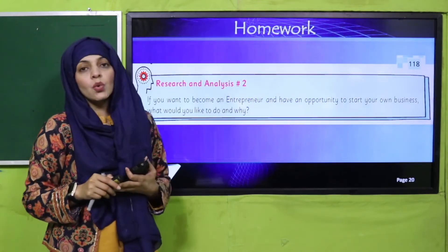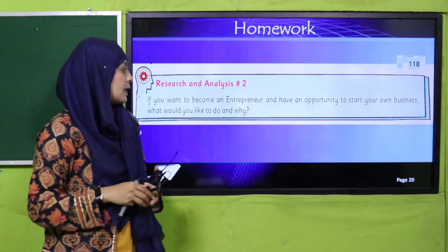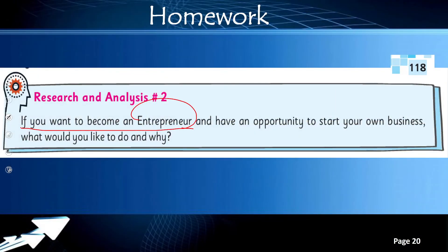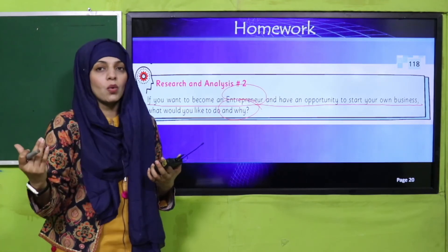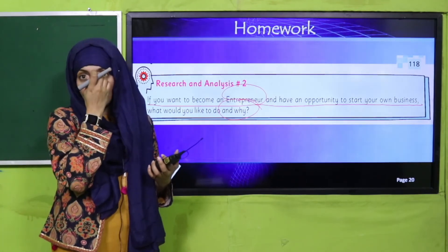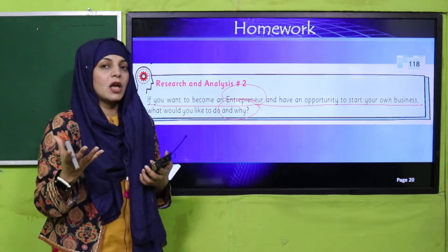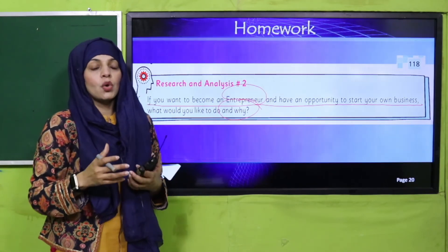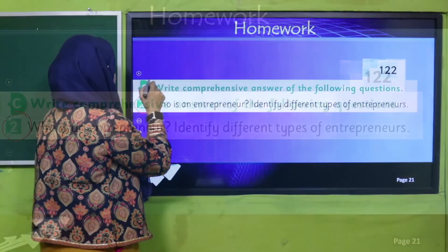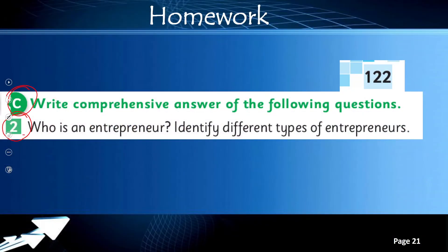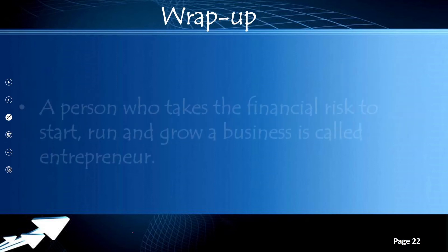My dear students, for homework you will do a research and analysis given on page number 118: if you want to become an entrepreneur and have an opportunity to start your own business, what would you like to do and why? My dear students, this is the same activity we started with — the drawing you made. So tell us: if you are an entrepreneur and you have an idea, what type of idea would it be, which business would you want to start? Write about it. Also do question number two on page 122, from exercise C: who is an entrepreneur, and identify different types of entrepreneurs.